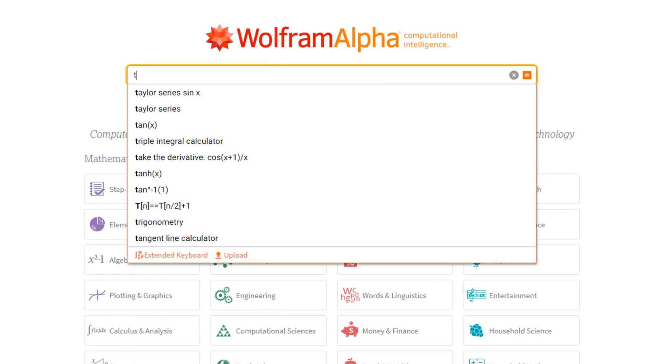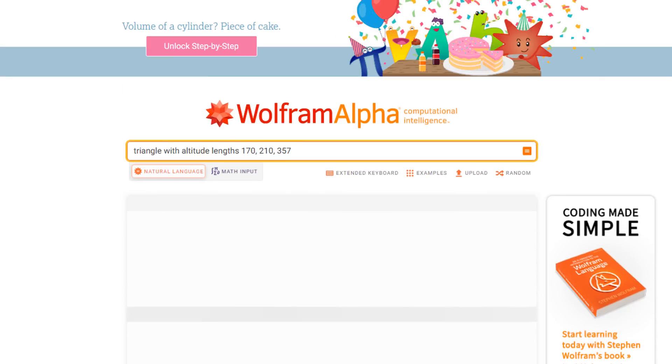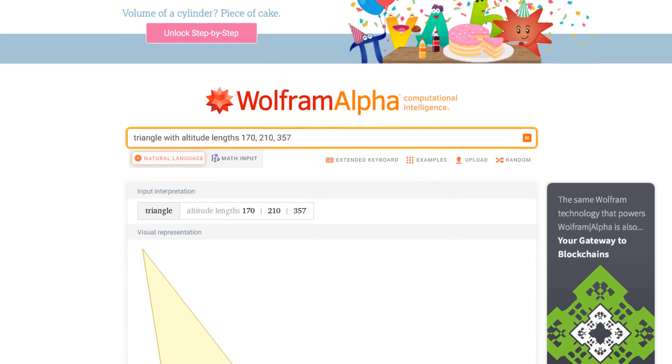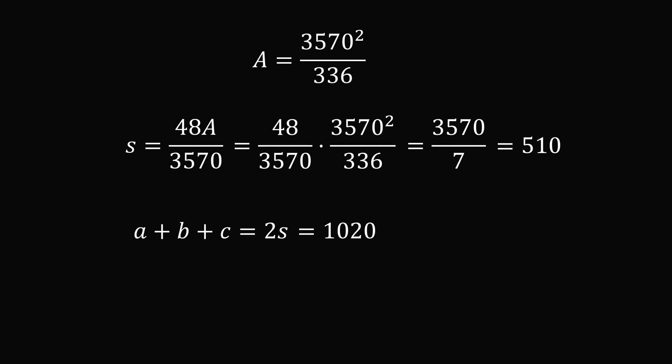But like a good student, we might check our answer in Wolfram Alpha. We simply type in, triangle with altitude lengths of 170, 210, and 357. Wolfram Alpha will tell you everything about the triangle, including that its perimeter is equal to 1020. So this is a good check on our answer. We did get the correct answer.